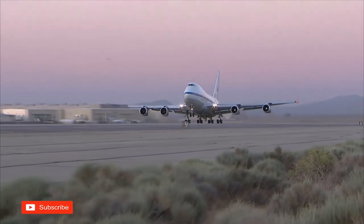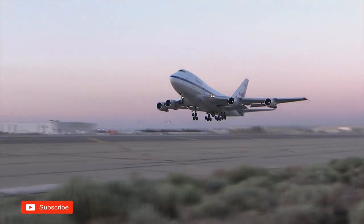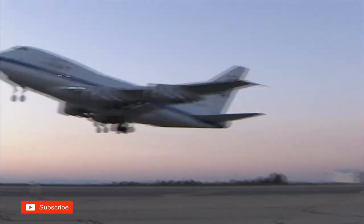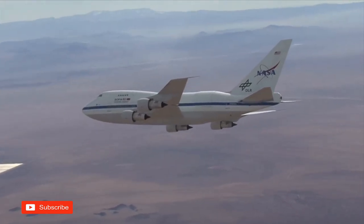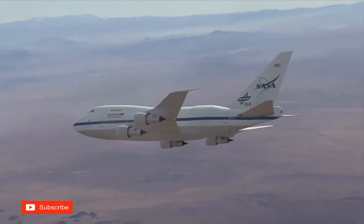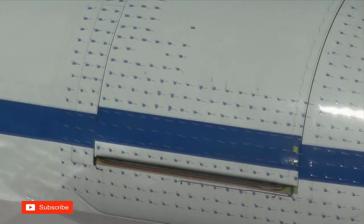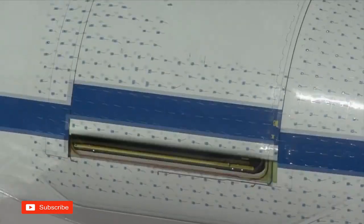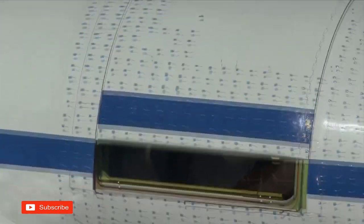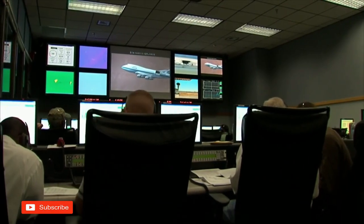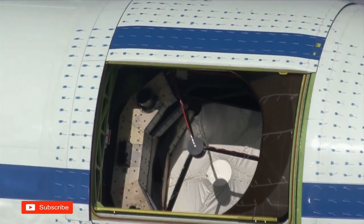Then, in December 2009, SOFIA took off for one of its most exciting tests. For the first time, the telescope door was to be opened completely in flight. At about 500 kilometers per hour, the pilot pushes a button to open the giant roll-up door. Despite all the simulations in the wind tunnel and on a computer, this was a moment of extreme tension.